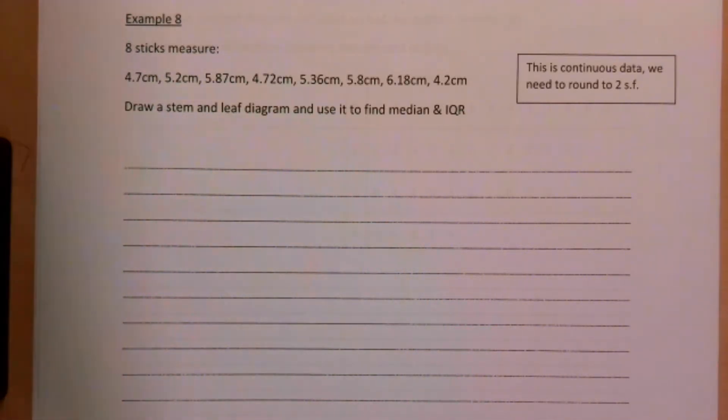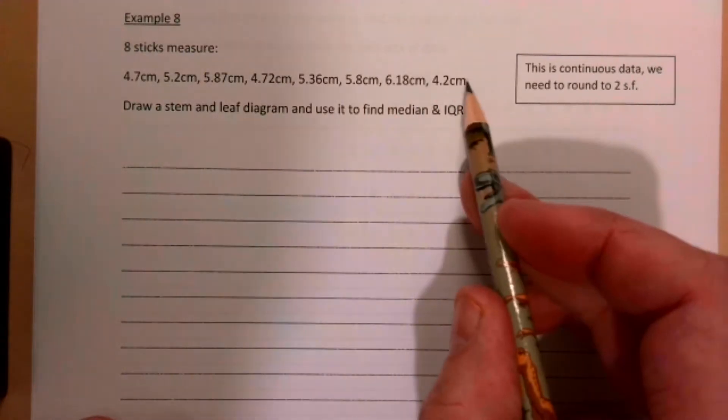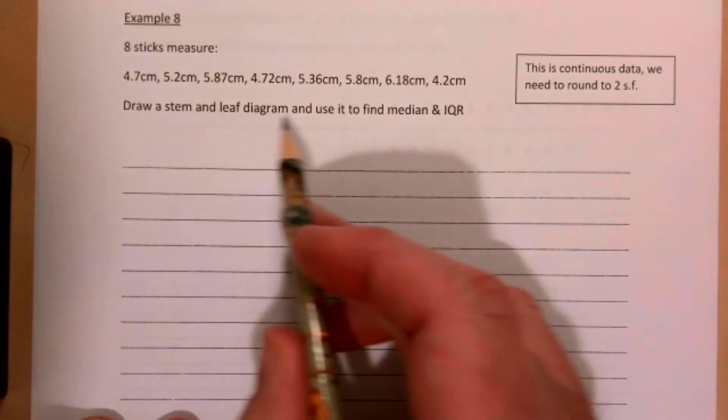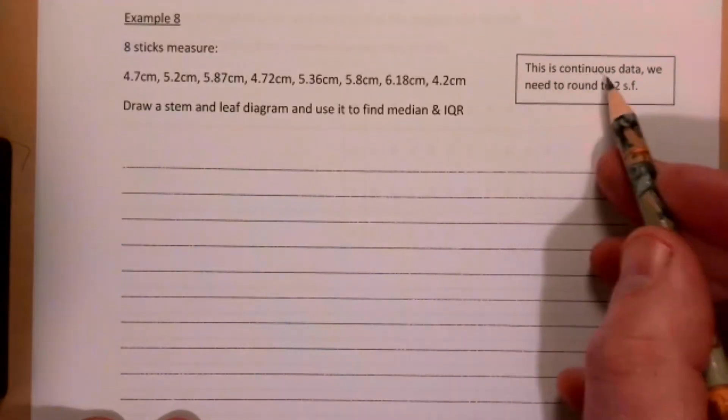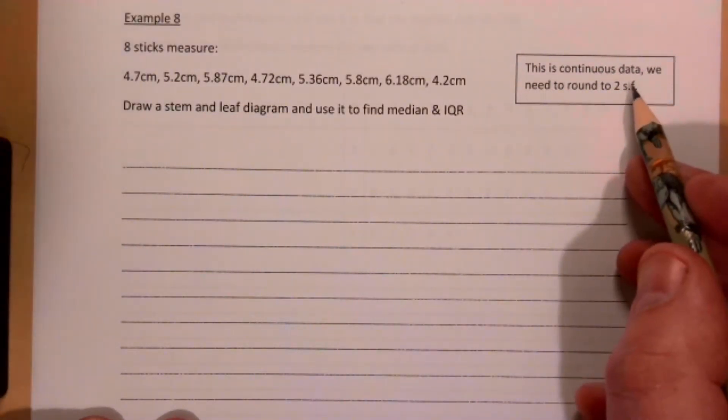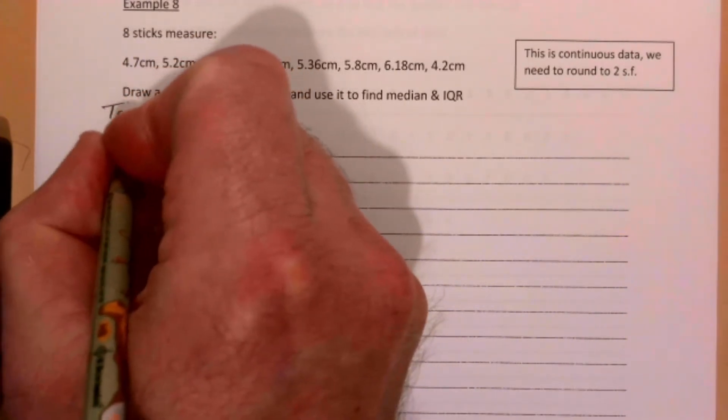This is AS stats, unit 2, looking at stem and leaf diagrams. This is example 8. Eight sticks measure these eight lengths here. Draw a stem and leaf diagram and use it to find the median and the interquartile range. This is continuous data, so we need to round to two significant figures.